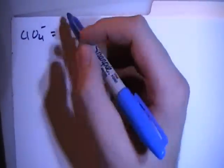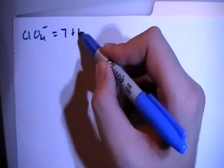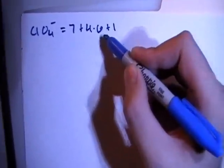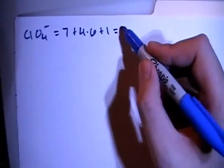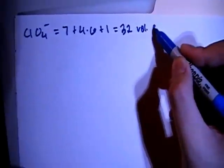In this video I'm going to show you how to draw the Lewis structure for the perchlorate ion. We've got ClO4 minus, that's going to give us 7 valence electrons from the chlorine plus 4 oxygens each with 6 valence electrons, plus 1 more for the minus 1 charge, which results in a total of 32 valence electrons.